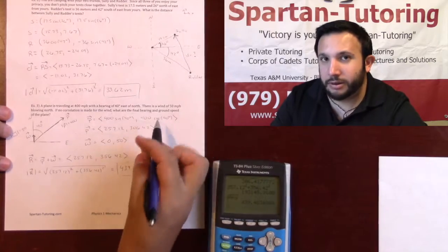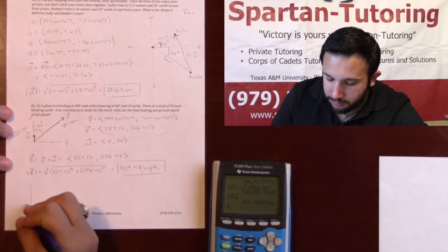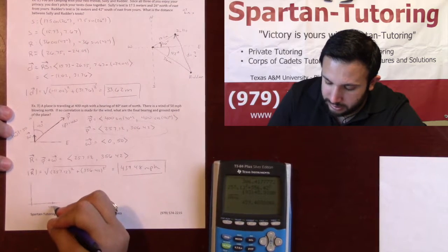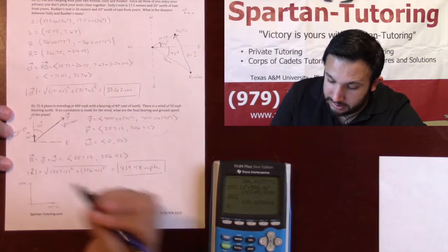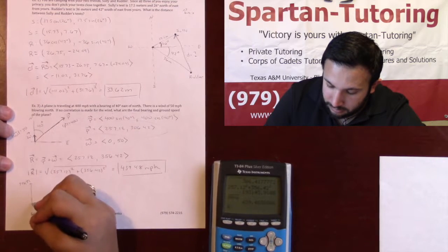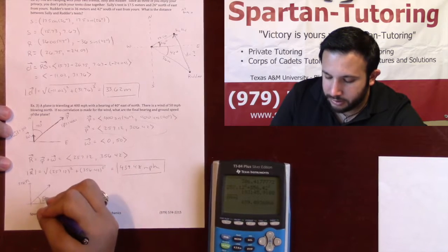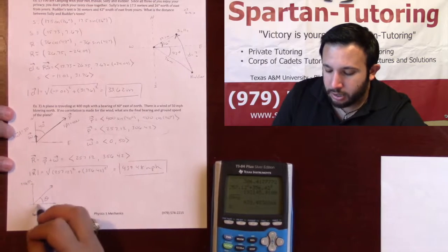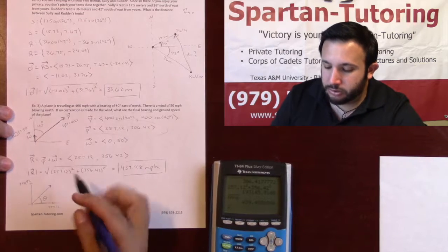As for the final bearing, that deals with your direction. For my resultant vector, I had 257.12 in the x and I had 356.42 in the y. More times than not, they're looking for this final angle, this theta right here. Notice I know what my opposite is and I know what my adjacent is. Opposite and adjacent, we definitely want to use tangent.